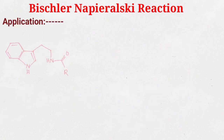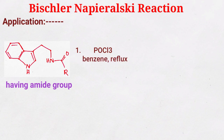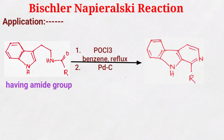Now let's look at one more example problem. Here this starting material also has an amide-like structure. Under treatment with phosphoryl chloride and benzene under reflux, followed by palladium on charcoal as the second step, we get the same type of product — the isoquinoline derivative.